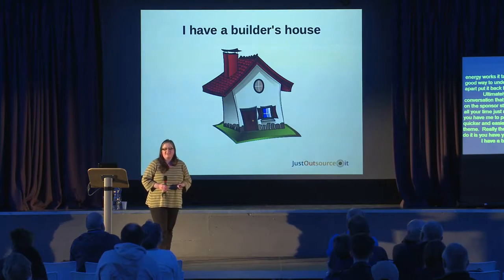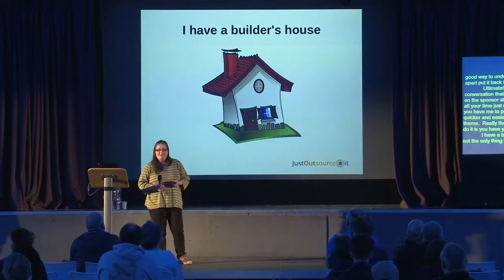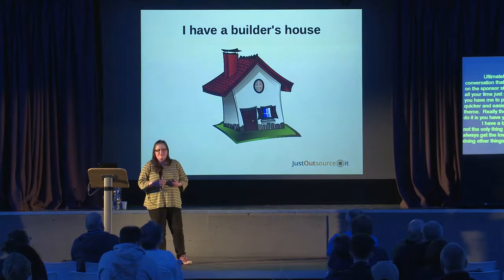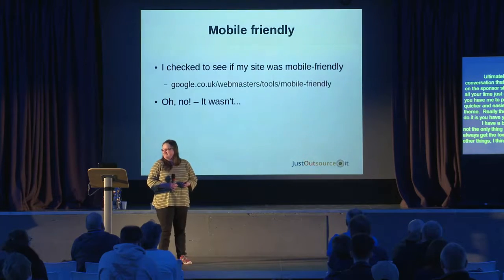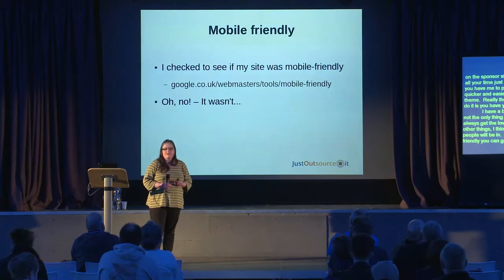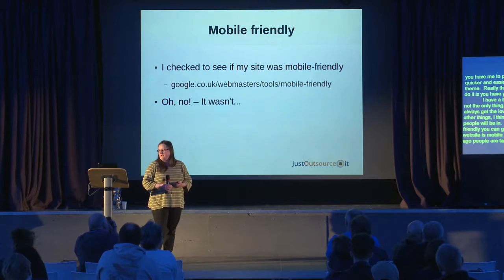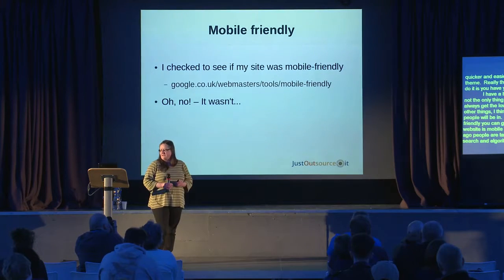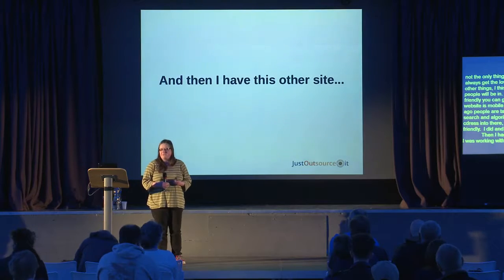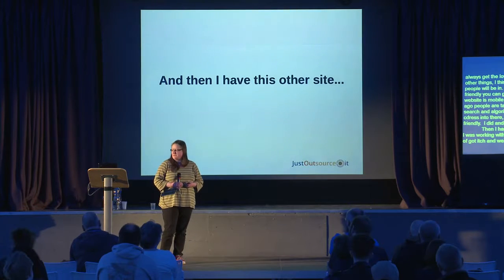I have a builder's house. WordPress isn't the only thing that I do, and my company website doesn't always get the love and attention it needs because I'm doing other things — a fairly familiar position. I checked to see whether my website was mobile friendly; you can go to Google's tool and check. About a year and a half ago, people were talking a lot about Google search algorithms. I put my website address in and found out it wasn't mobile friendly. Then having made one child theme, I got the itch and went on to make another one.